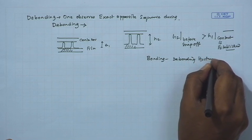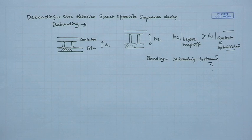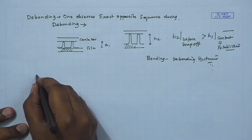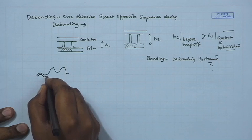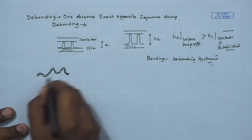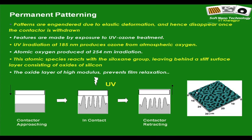If one wants to use this technique as a patterning technique, the first necessary condition is to somehow freeze the structures. Here one can take help of chemistry: since this is PDMS (polydimethylsiloxane) containing the Si-O-Si backbone, if UV light is shone on the film a thin layer of silicon oxide forms over the film surface, which is stiff enough to prevent relaxation of the film. Therefore, you can make the patterns permanent. Once the patterns are permanent and the contactor is removed, you can perform an AFM scan, which is impossible in the presence of the contactor.